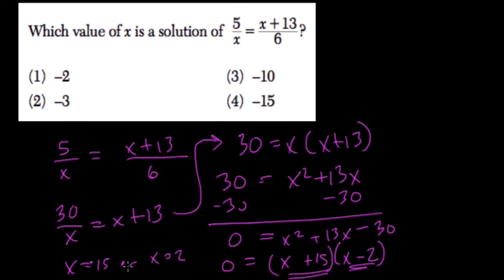Or x equals 2. Now we're going to list one of the choices, though, and that's negative 15, choice 4.